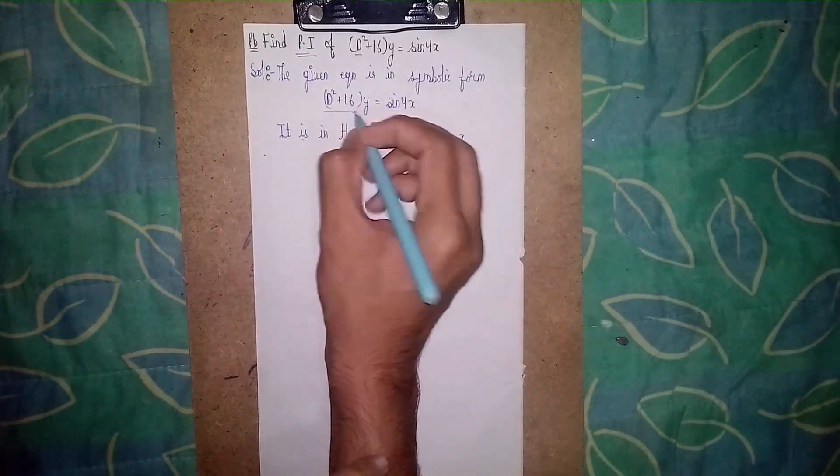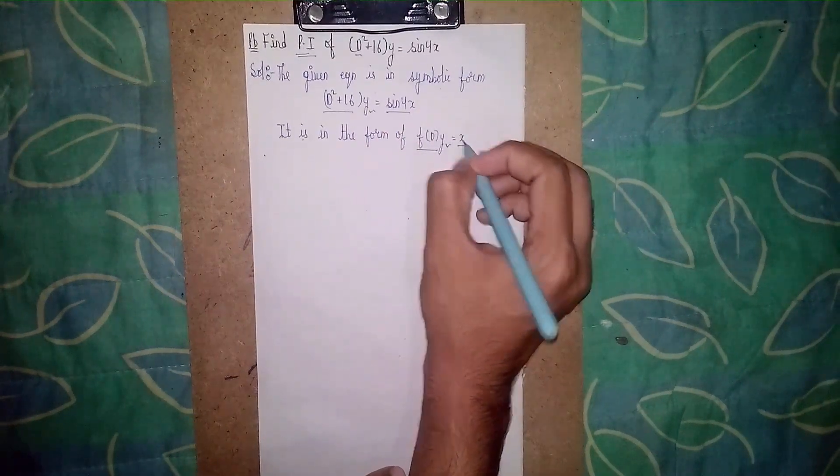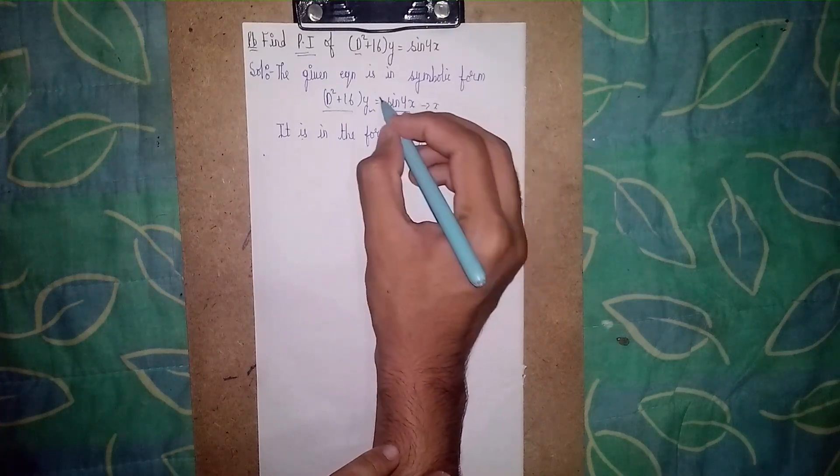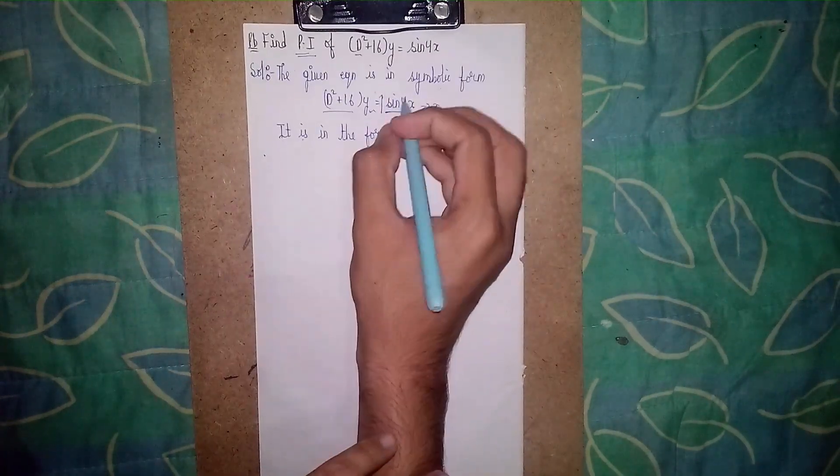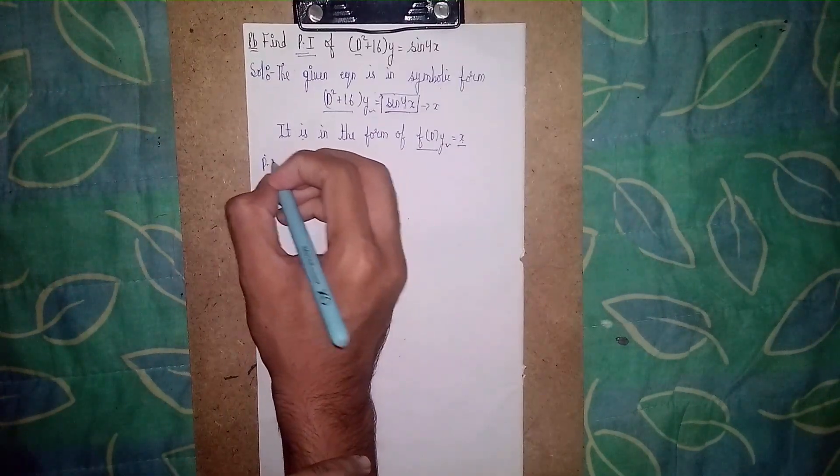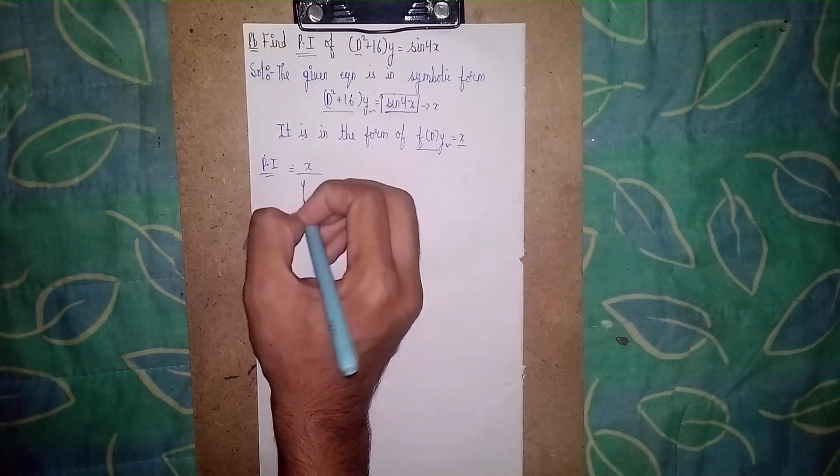f(D) means this is f(D), this y is y, and this whole function is X. This X - don't think this x means just x - this whole function on the right side is X.